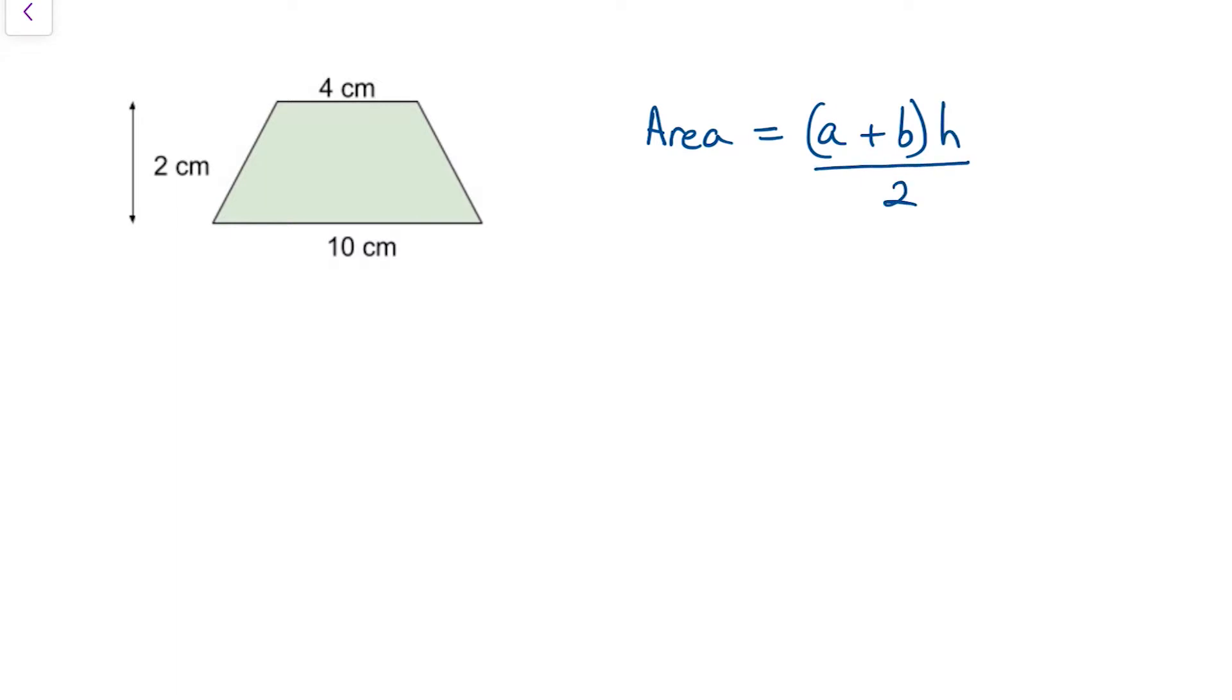A and B are the opposite parallel sides. So this length here and this length here, they would be A and B. And the height, obviously that's this one here, that's the perpendicular height.